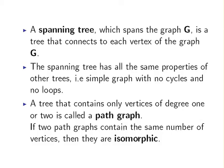An important definition is a path graph. A tree that only contains vertices of degree one or degree two is called a path graph. If two path graphs contain the same number of vertices, then they are necessarily isomorphic.